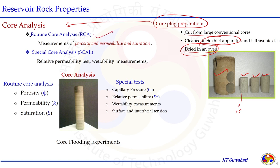Core analysis can be performed in two categories. The first is Routine Core Analysis (RCA), where measurement of porosity, permeability and saturation are done. Special tests also need to be performed depending on the need — Special Core Analysis includes relative permeability tests, wettability measurement, core flooding experiments, and capillary pressure. The core sample of about 1 inch diameter and 4 to 6 inches length is routinely subjected for porosity, permeability, saturation, as well as relative permeability, wettability, and surface and interfacial tension measurements.